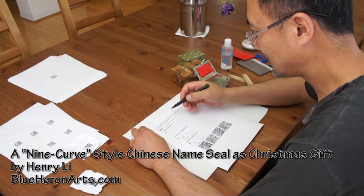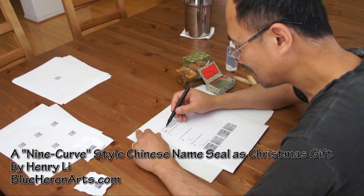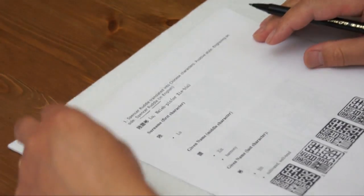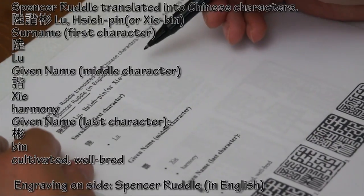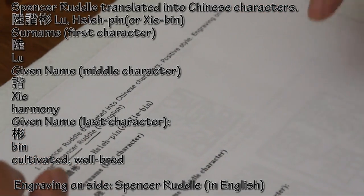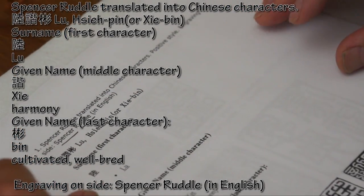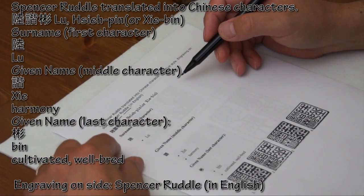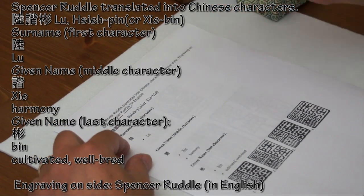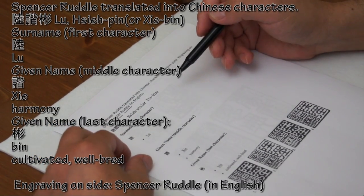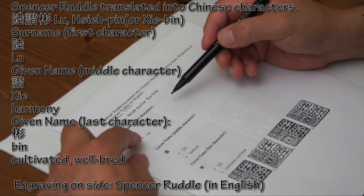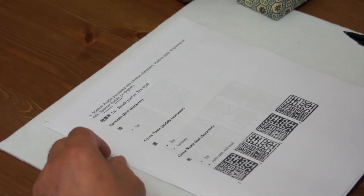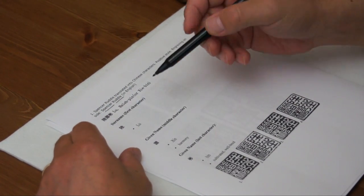The first seal I'm going to do is a name seal for Spencer Rudel. You can find a website listed in the video description where you can find the corresponding Chinese characters and the most frequently used Chinese names for male or female. You can specify your personal traits and get the recommendations.